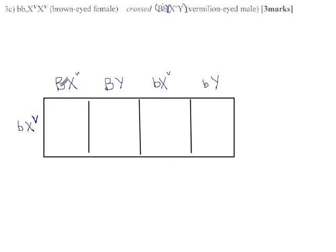So what kind of fruit fly babies do we get from this? Big B, little b. Big V, little v.